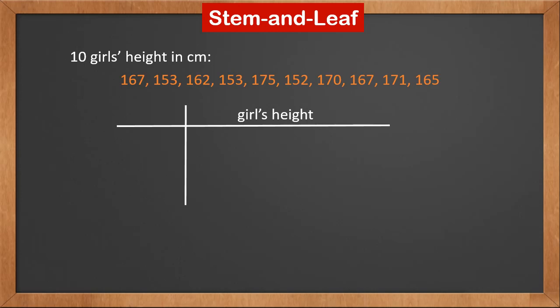These heights are all three-digit numbers. The first two digits are 16, 15, and 17. Let's put them in the left part in order. Then let's put the last digits one by one to the right, also in order.